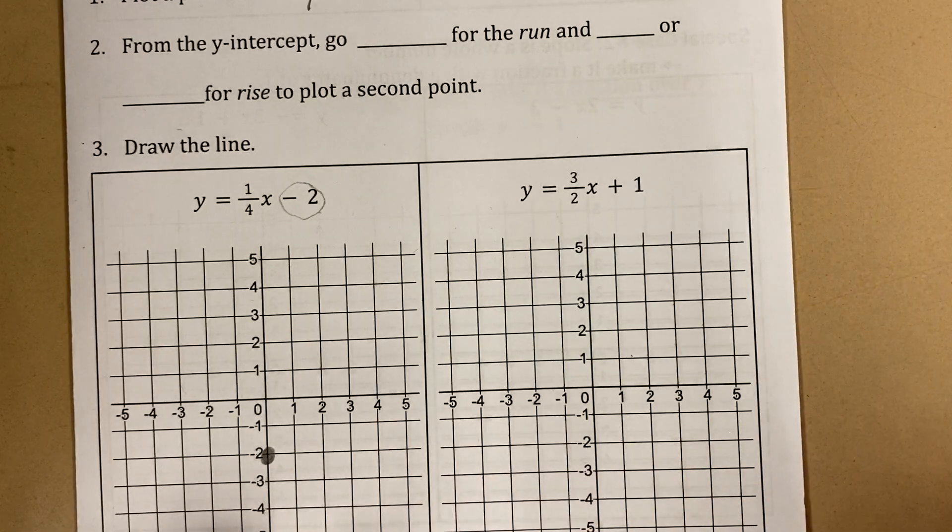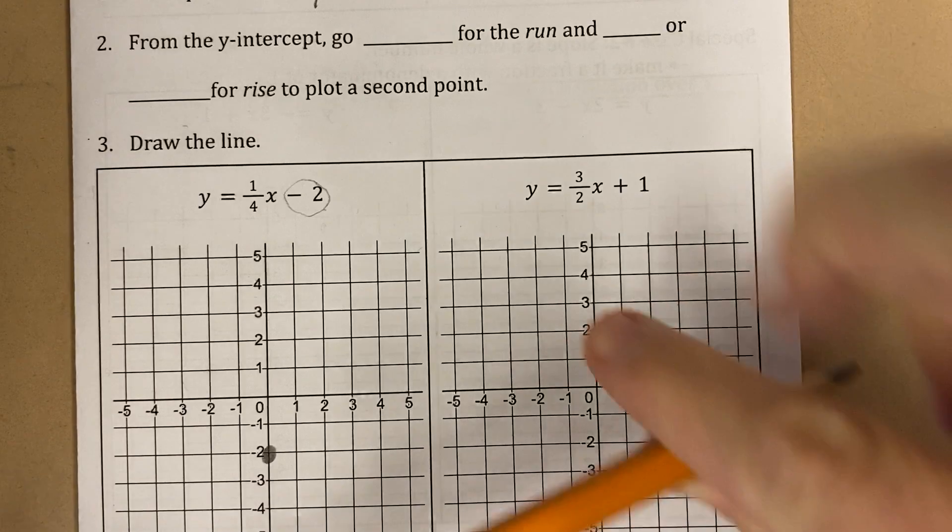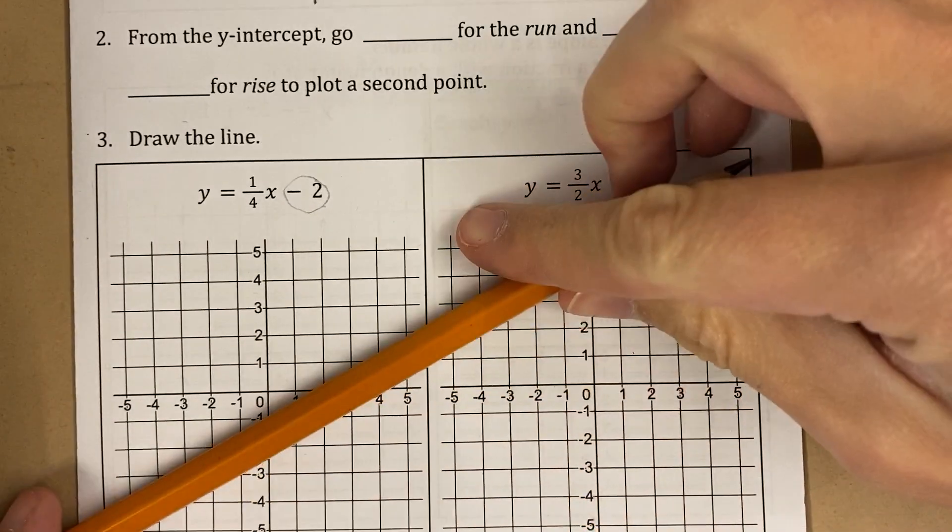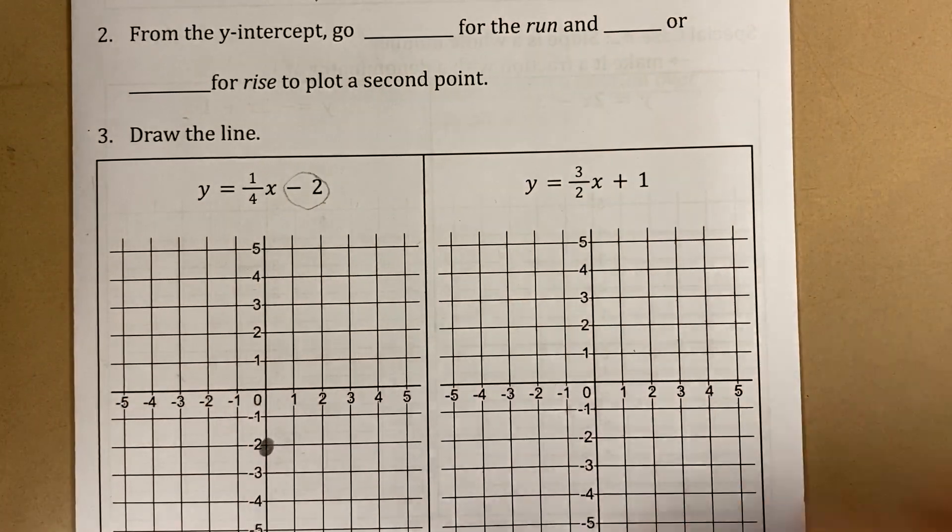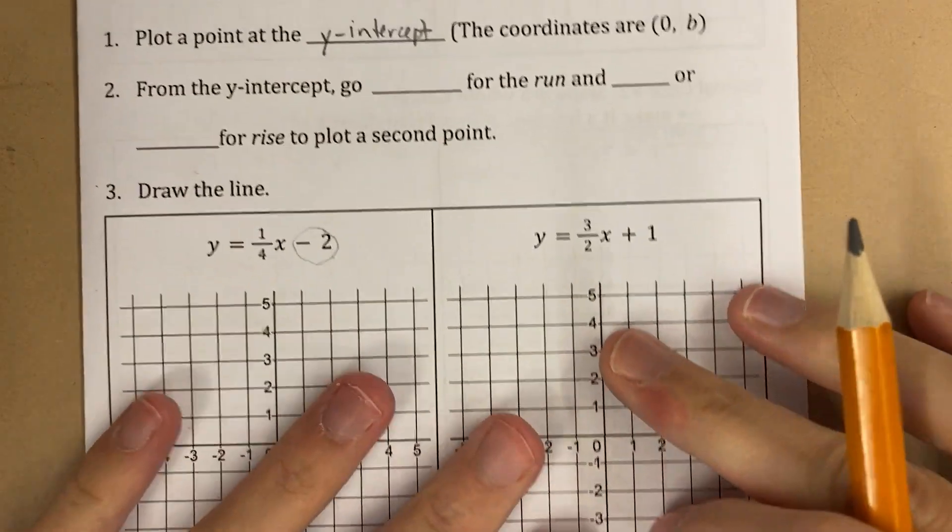I only need two points to graph a line, because once I have two points, then I know where the line is. Like if the two points are here and here, the line is here. If the two points are here and here, then the line is here. Like whatever it is, it's always going to go through those two points.